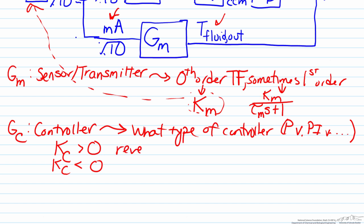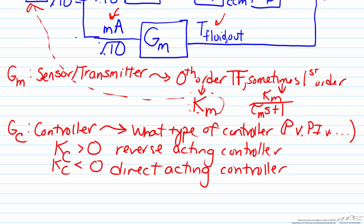So when KC is greater than zero, it is known as a reverse acting controller. When KC is less than zero, that is known as a direct acting controller. You can get some more information about reverse versus direct acting controllers using other screencasts.